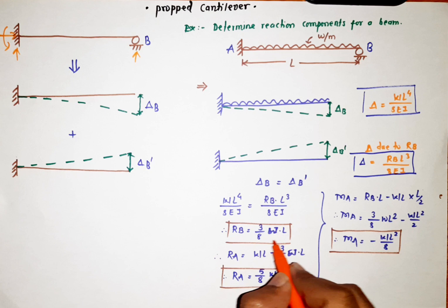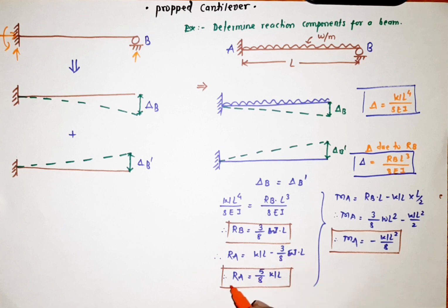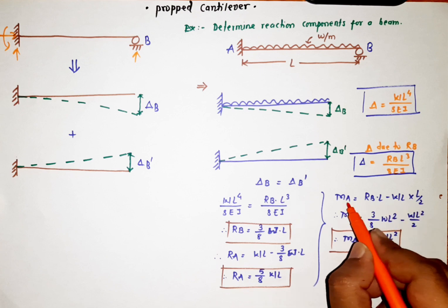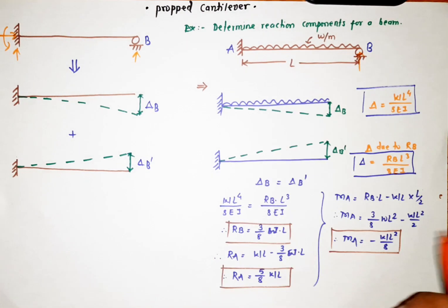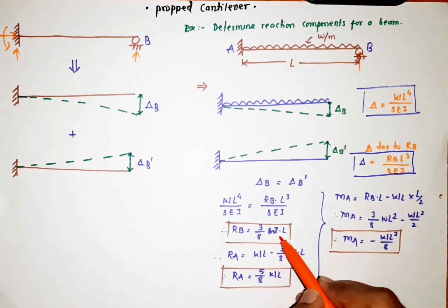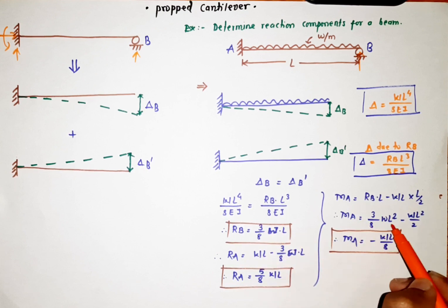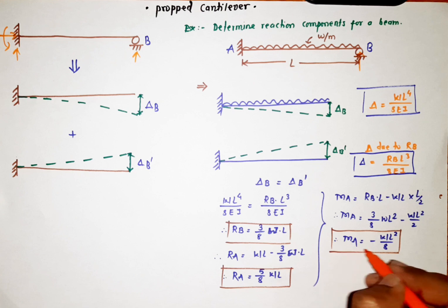Knowing RB = 3wl/8, we can find RA. The total load is w×l, so RA = wl − 3wl/8 = 5wl/8. To find the moment at A, we use MA = RB × l − w × l × l/2. Substituting RB = 3wl/8 gives MA = 3wl²/8 − wl²/2, which simplifies to MA = −wl²/8.